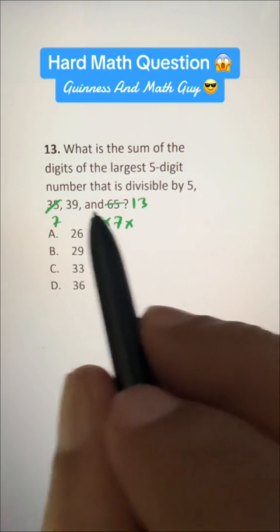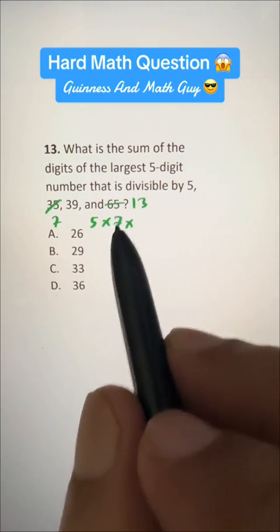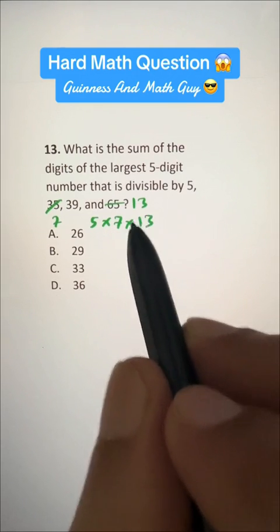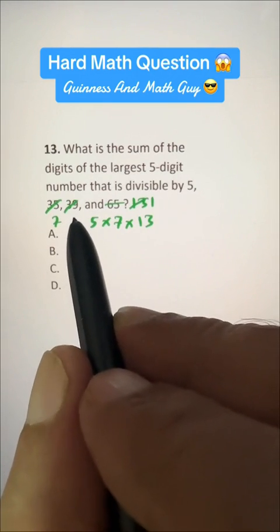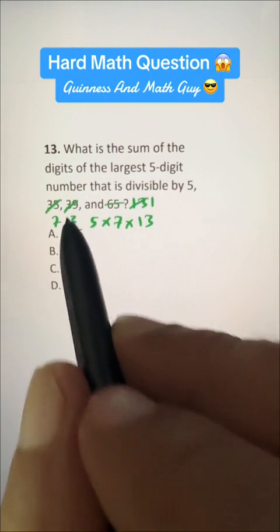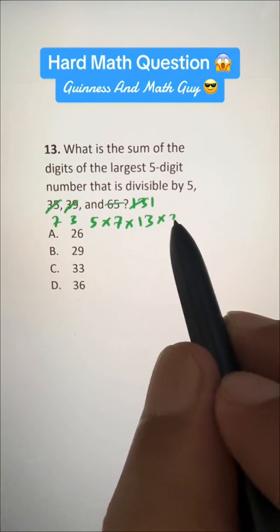And then we have, in 39 and 13, we have 13 common. So write 13 common here. 13 times 1 is 13, and 13 times 3 is 39. So write 3 here.